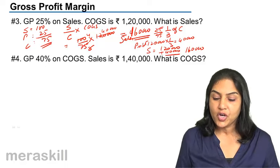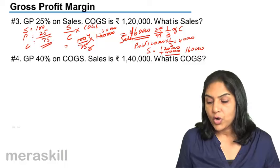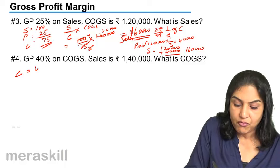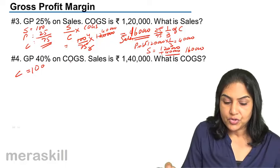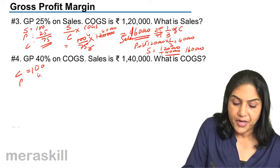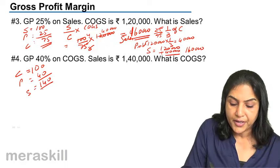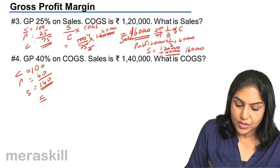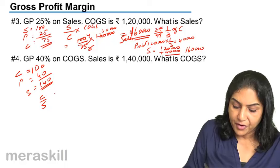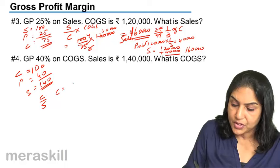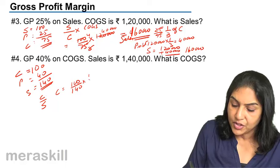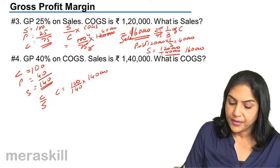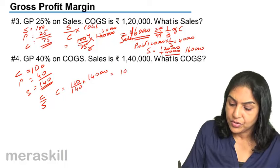Another example: gross profit is 40% on cost of goods sold and sales is 1 lakh 40,000. What is cost of goods sold? If cost is 100, profit is 40, so sales is 140. We need cost from sales, so cost equals 100 by 140 of 1 lakh 40,000. When sales is 140, cost is 100, so when sales is 1 lakh 40, cost equals 1 lakh.